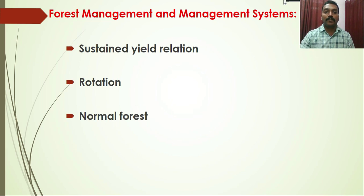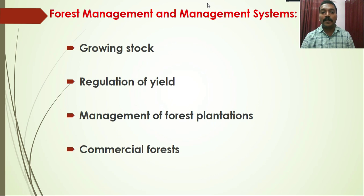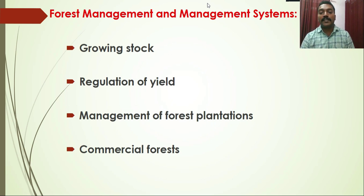We will also study Growing Stock, which refers to the trees or stems that are part of the forest area. The term Normal Growing Stock is also dealt with in detail. Regarding Regulation of Yield — the yield from any given forest area should be aimed at achieving sustainable yield. Forests differ in terms of age classes, size classes, and species, but the ultimate aim is to achieve sustainable yield.